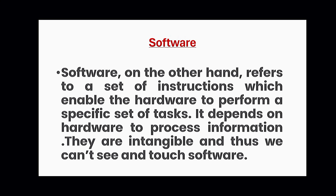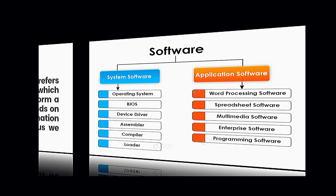Software means a set of instructions that help provide information to the computer which we can execute. Software is intangible — you can't touch it, you can just see it and see the instructions performed on it. So you can't touch software.